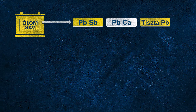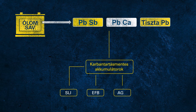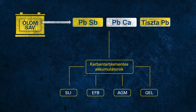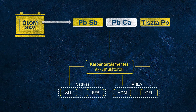Let's focus on the different battery types under the umbrella of maintenance-free batteries: SLI, EFB, AGM, and GEL. These different battery technologies can be divided into two subgroups — flooded batteries with fluid electrolyte, and so-called VRLA batteries with fixed electrolyte and valves inside. VRLA stands for valve regulated lead acid.